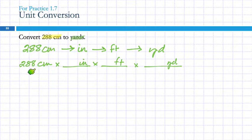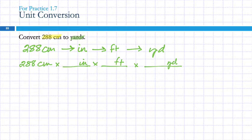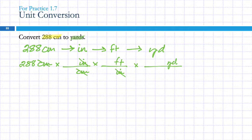We took our path, made some fractions, and put the units in there. Now I want the centimeter unit to go away, so in the next term I divide by centimeters so they cancel out. Then I have inches — I want inches to go away, so I divide by inches and they cancel out. Then feet — divide by feet. I have one unit left, and it is where I wanted to go.